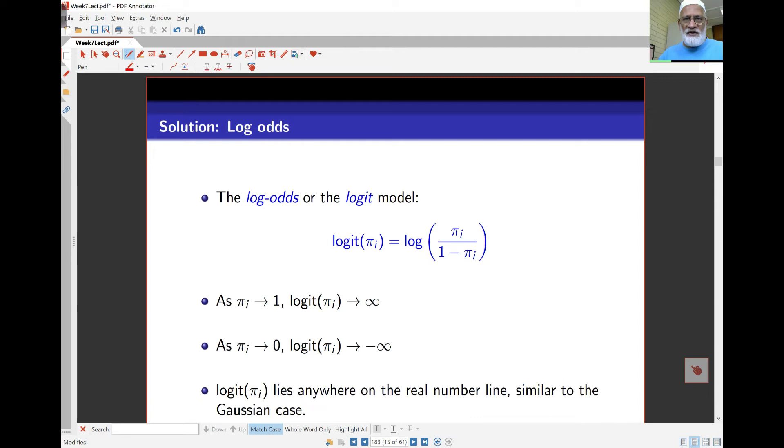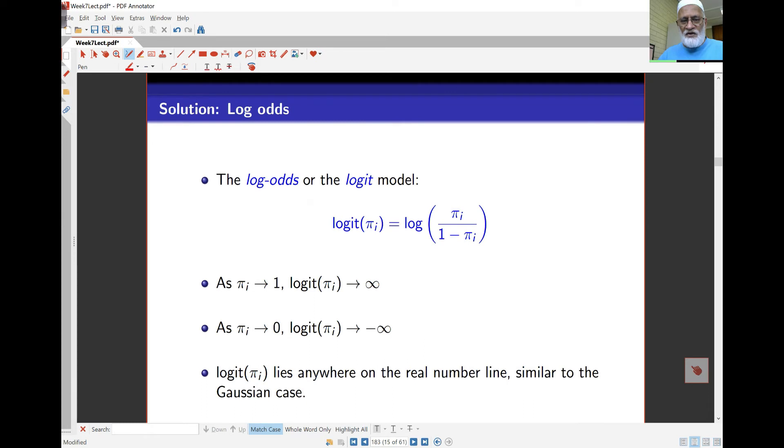In this case, what we'll do is take a look at the logit, or the log of the odds ratio, defined as log(πi / (1 - πi)). As πi goes towards 1, the bottom line goes towards 0, so this bracket becomes very large and the log goes to infinity.